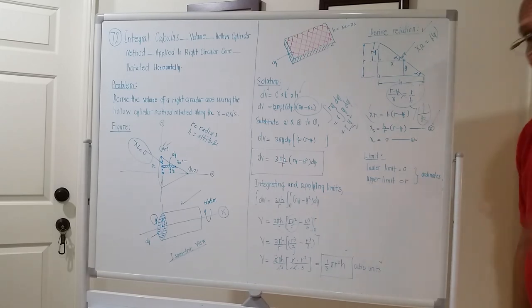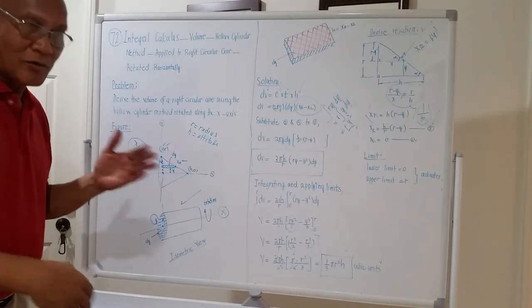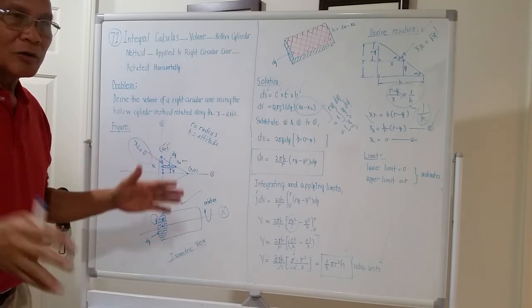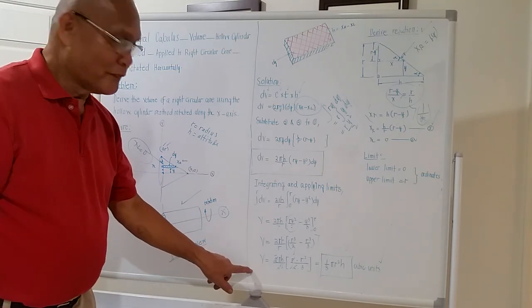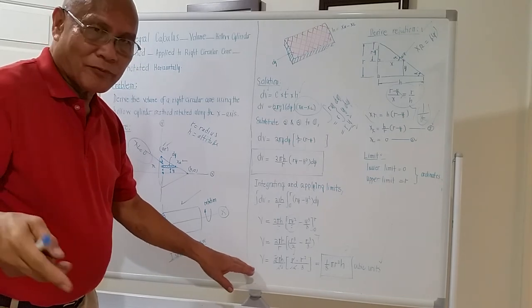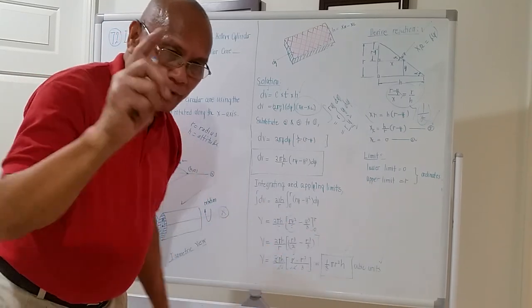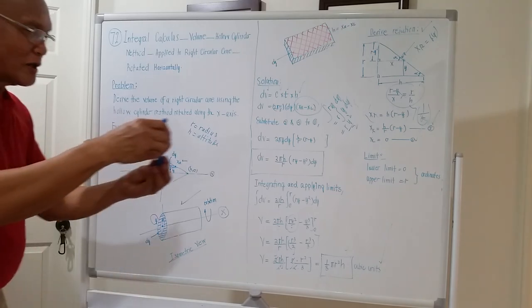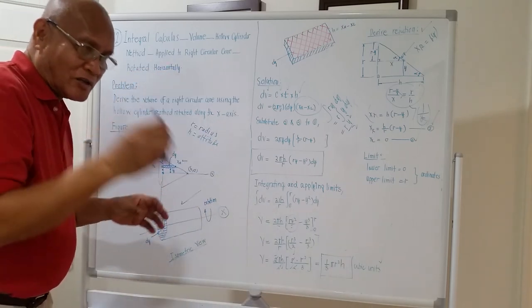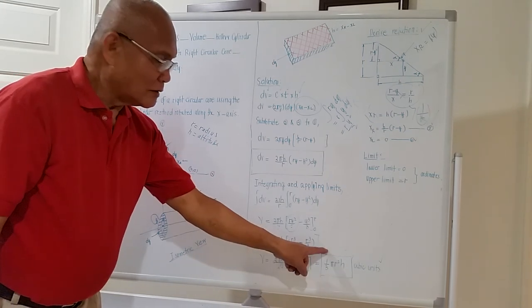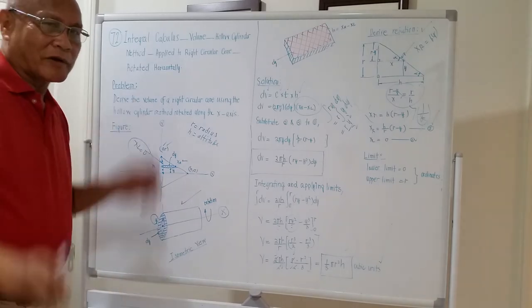As you can see, whether you use a horizontal axis rotation or a vertical axis rotation, as long as you set up your relations correctly, the resulting volume will be the same. The volume of a right circular cone is 1/3 πR²H, whether rotated with respect to the Y-axis or the X-axis. That's the significance of this topic. Good afternoon.